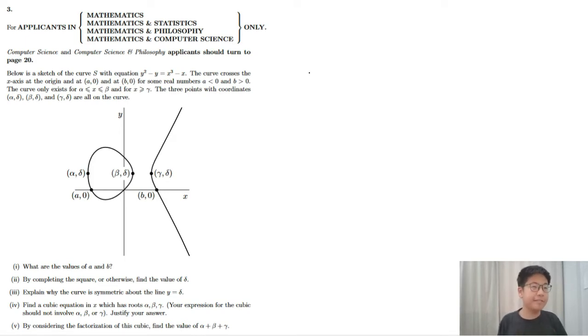Now we have a cubic curve with a quadratic y term. The curve crosses the x-axis at the origin and at a, 0 and b, 0 for some real numbers, a is less than 0 and b is greater than 0. The curve only exists for alpha is less than beta and for x is greater than gamma.